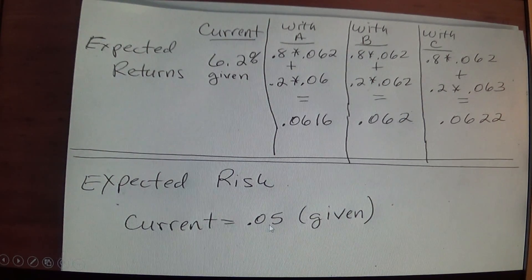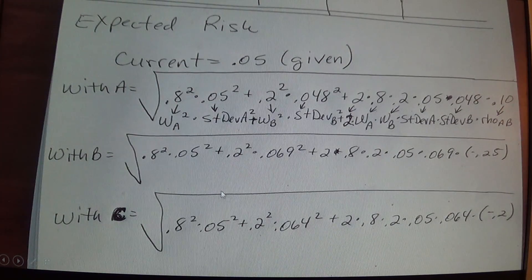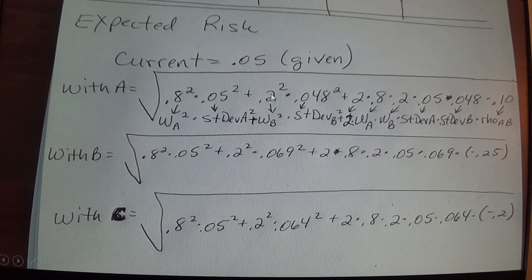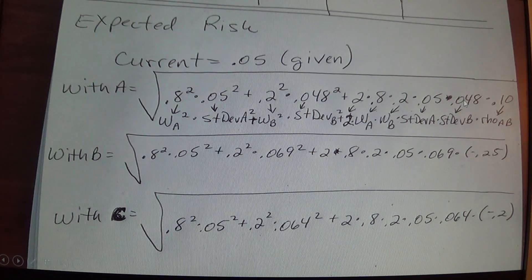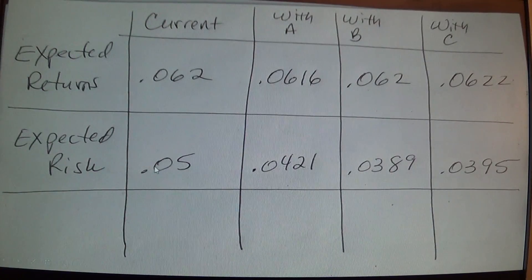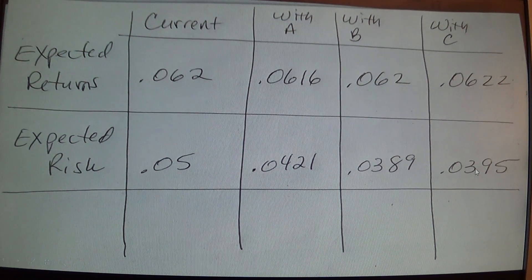For expected risk, the current portfolio has a risk of 5%, which is given. For the others, we use the two-asset variance formula: weight of current squared times its standard deviation squared, plus weight of the new asset squared times its standard deviation squared, plus 2 times both weights times both standard deviations times their correlation. The correlation between the current portfolio and A is 0.1 from the table. We do the same for B and C, substituting their standard deviations and correlations. The resulting expected standard deviations are 5%, 4.21%, 3.89%, and 3.95% for current, A, B, and C respectively.